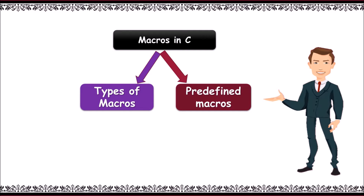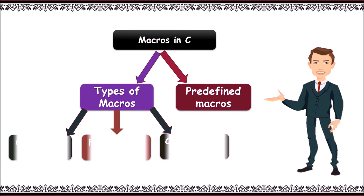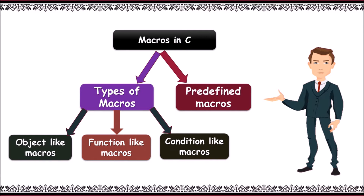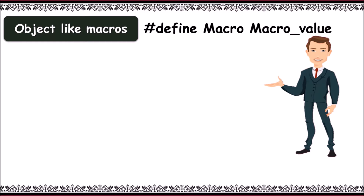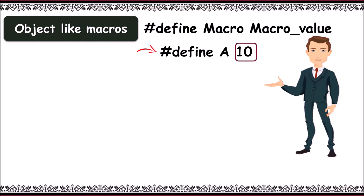Macros in C are divided into types: predefined macros, and further object-like, function-like, and condition-like macros. For object-like macros, we use the syntax: #define MACRO MACRO_VALUE — for example, #define A 10 allocates the constant 10 to A.